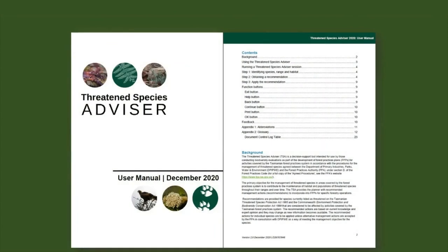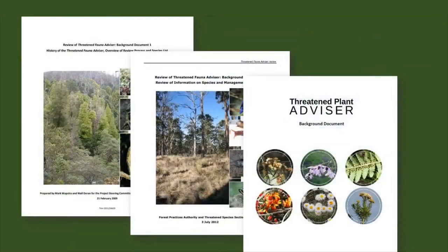The FPA also has a suite of documents to assist you when using the Advisor and for FPP planning in general. These include the Advisor user manual, which contains instructions on how to use the Advisor and a glossary of terms and abbreviations. This can be accessed by clicking the help button in the Advisor or on the Advisor landing page of the FPA website. Also on this page are background documents with information on how the Advisor was developed and reference lists on the information used in the Advisor.